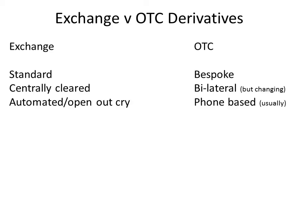Derivatives exchanges are often said to be either open outcry — that is to say, people physically meet in an exchange building to trade these derivatives — or a lot of these derivatives contracts can now be executed on an electronic platform. In the over-the-counter market, a huge number of OTC trades are still transacted over the phone.